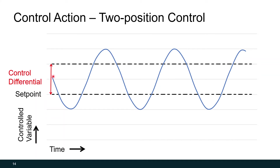Let's go through the example. We have space temperature and we're controlling a space heater. As temperature drops and crosses setpoint, we turn on the heater. Temperature stops going down as fast, the space starts warming up. When we hit setpoint again, we actually ride through setpoint and let the space keep getting warmer until the temperature matches our control differential. When we hit that line, we turn the heater off. The space stops warming up and eventually starts cooling down. Again, we ride through the control differential until we hit setpoint, where we turn it on, and the cycle repeats.